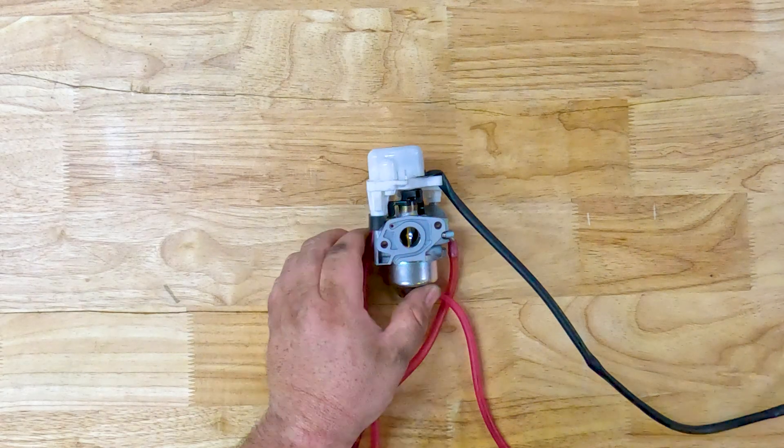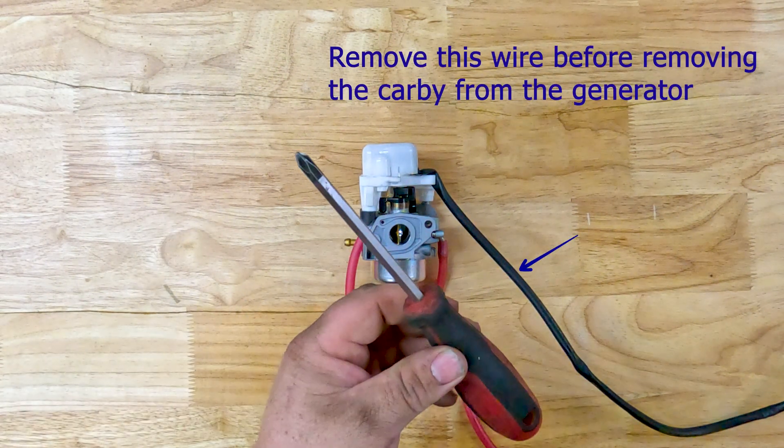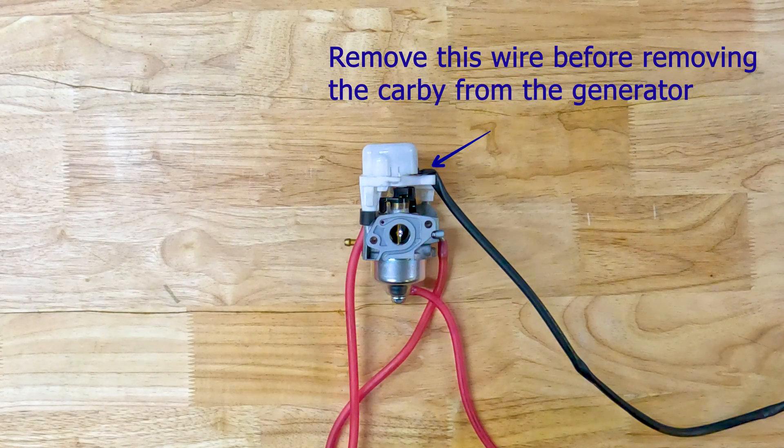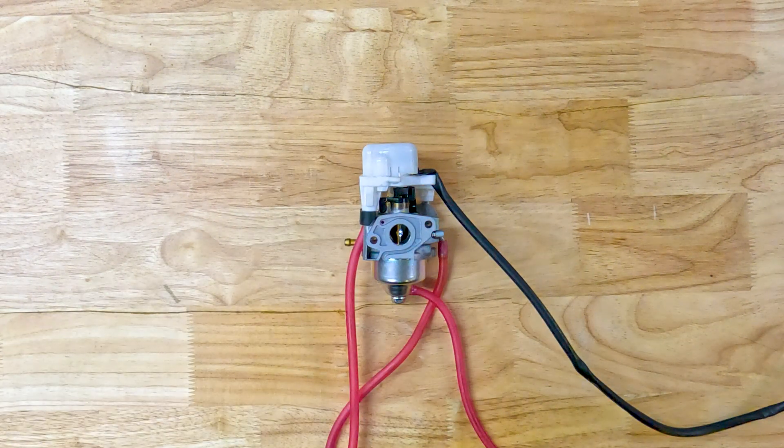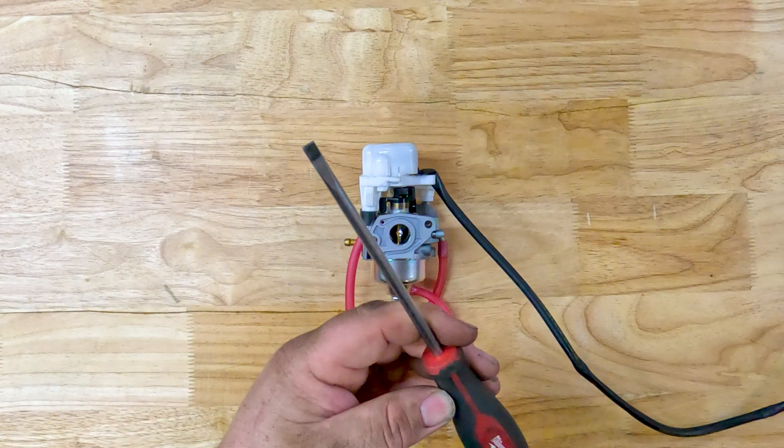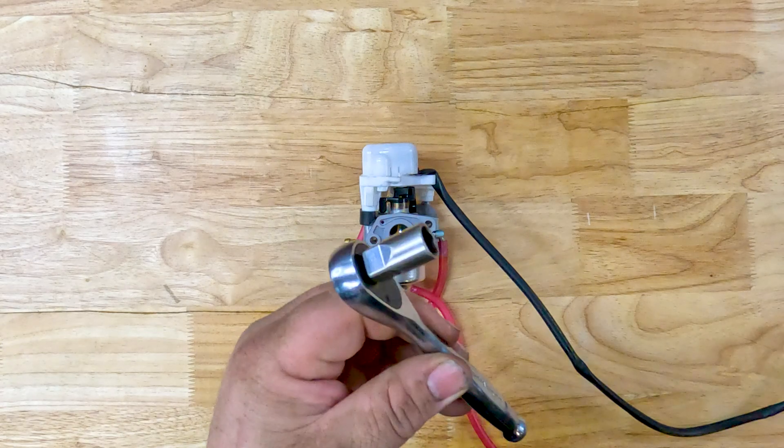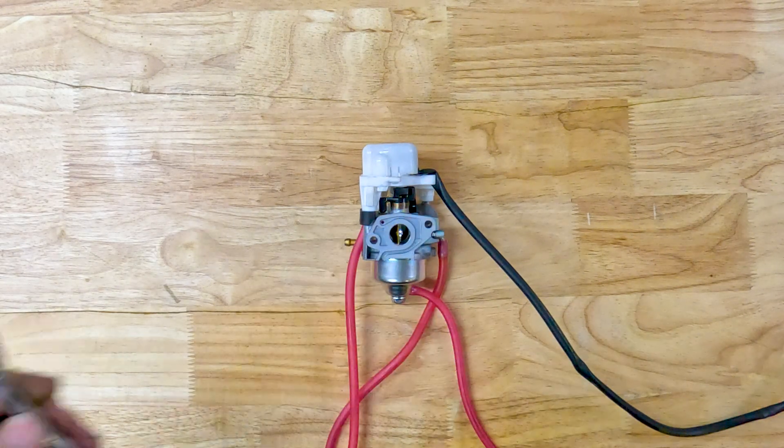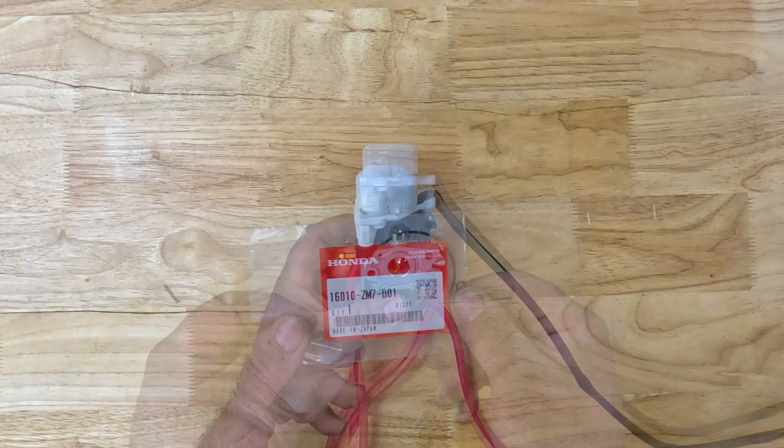Once the carburetor is off the generator like this, the tools you'll need to do the service: a Phillips head screwdriver, pointy nose pliers, a flat blade screwdriver with a thin head, and a 10mm socket and ratchet. And of course you'll need the little service kit.